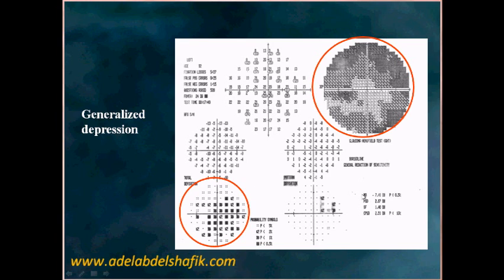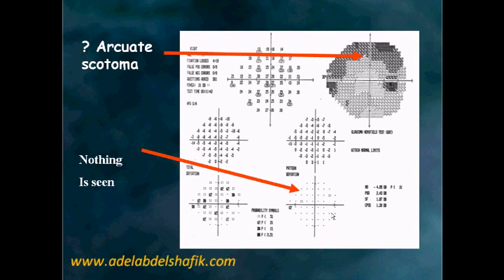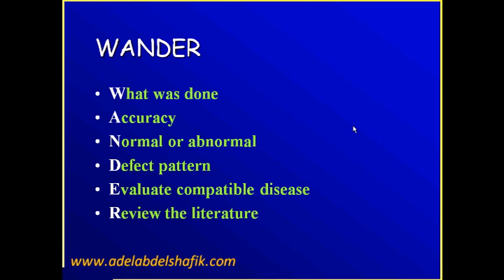We call this a generalized depression, and this is the localized depression. Being affected above and nothing below — it's a step. We don't depend on the grayscale. We depend on the pattern deviation and the total deviation. If you read it from the grayscale, you'll say there is a defect, but here there's nothing — so never depend on the grayscale. Then start to evaluate compatible diseases and check the literature to see if what you are thinking is correct.